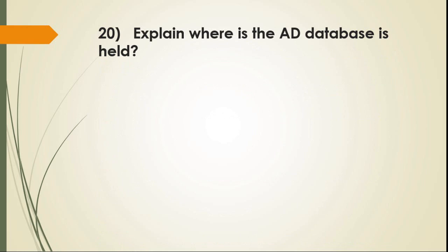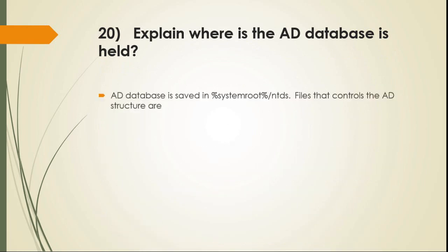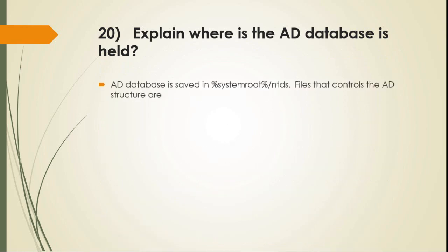Question 20: Explain where the AD database is held. The AD database is saved in %SystemRoot%\NTDS. Files that control the AD structure are: NTDS.dit, EDB.log, RES1.log, RES2.log, and EDB.chk.